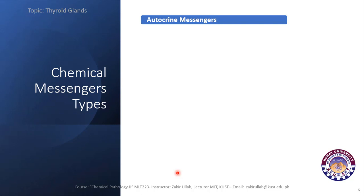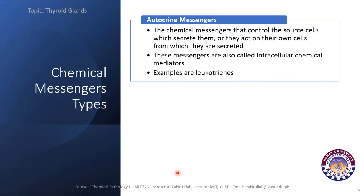The autocrine messenger is the third type of chemical messenger. These messengers act on the very cell that secretes them and are also called intracellular chemical mediators. Examples of these mediators include leukotrienes.